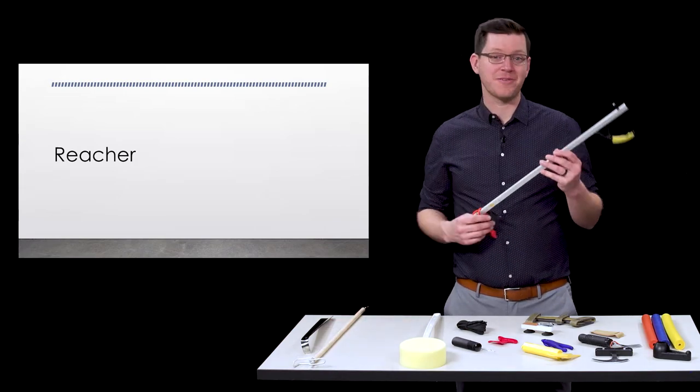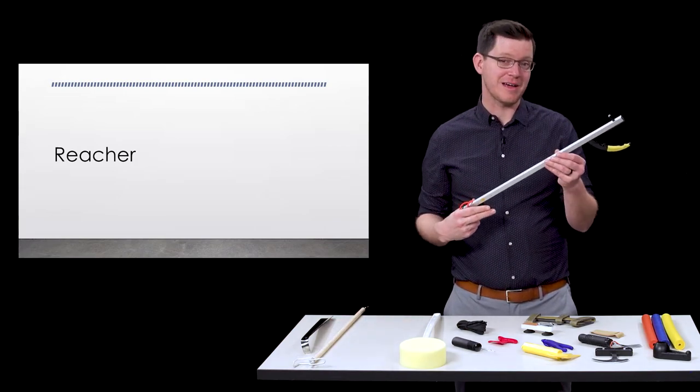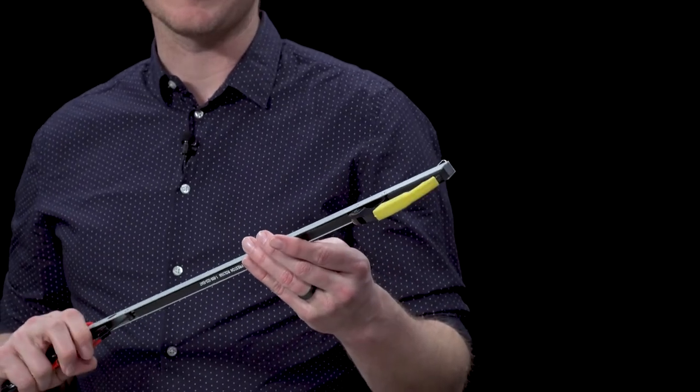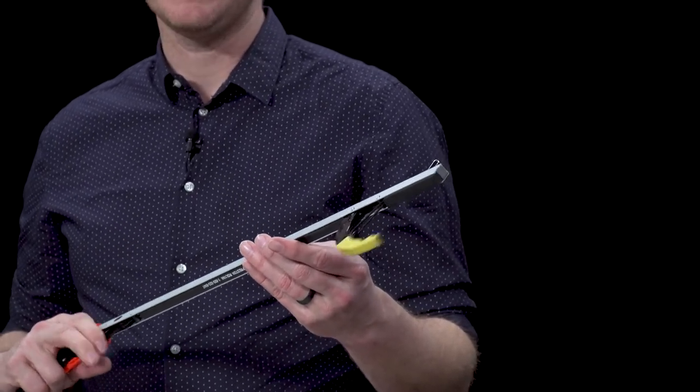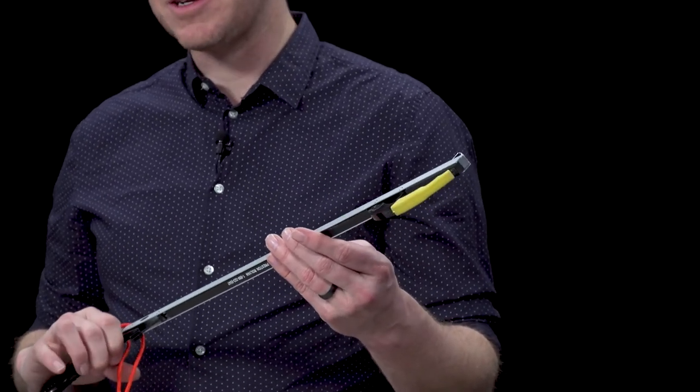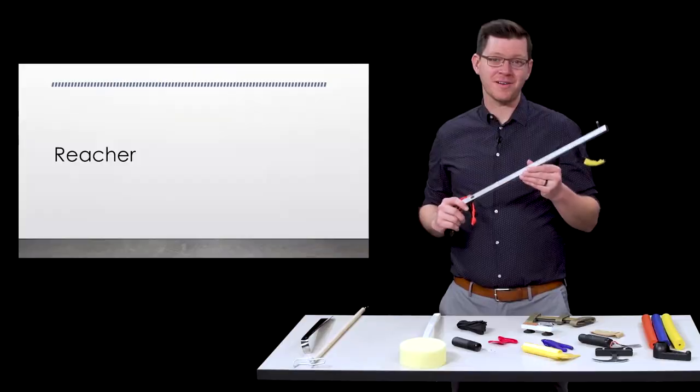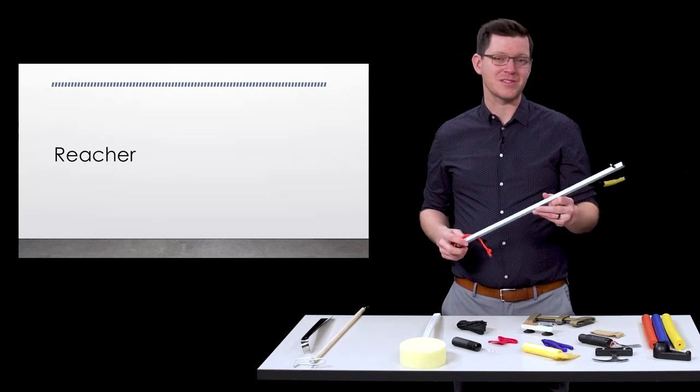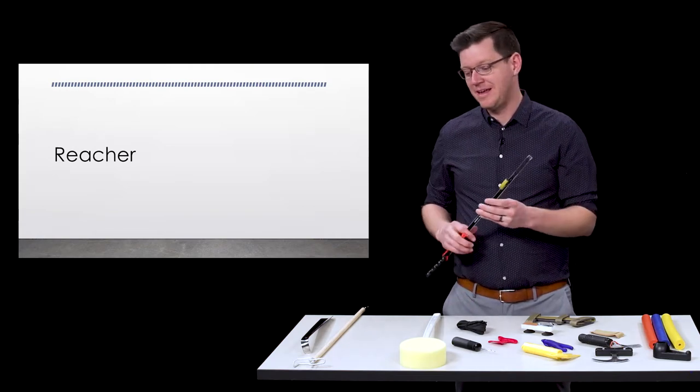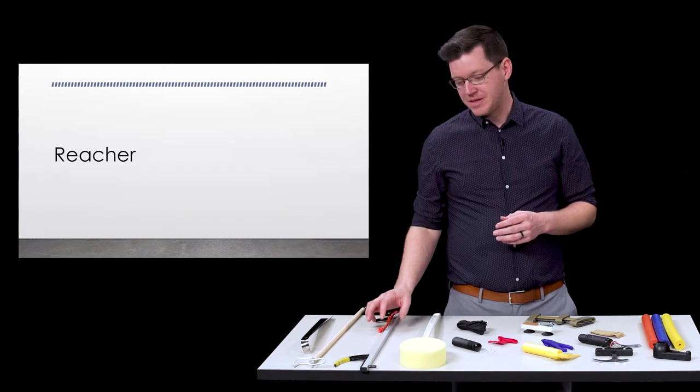Oftentimes you'll see reachers. These are pretty easy to use reachers that allow you to be able to grip onto things that are on the ground or up above with pretty low resistance. They're not all created equal so finding one that is sturdy and maybe investing a couple more dollars on one that is a little bit stronger would be good.